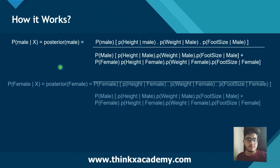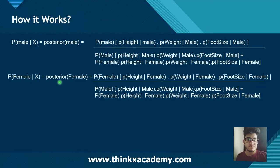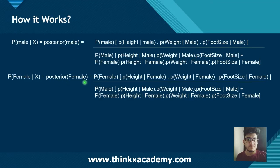The next formula is the probability of female given X. We replace Y with female. The denominator remains the same. One important point to note is that in both these probabilities, the denominator is the same. Since we are just going to compare these two equations, we do not need to calculate the denominator. We will only calculate the numerator and compare the posterior of male with the posterior of female. If the posterior of male is greater, the sample belongs to the male category.